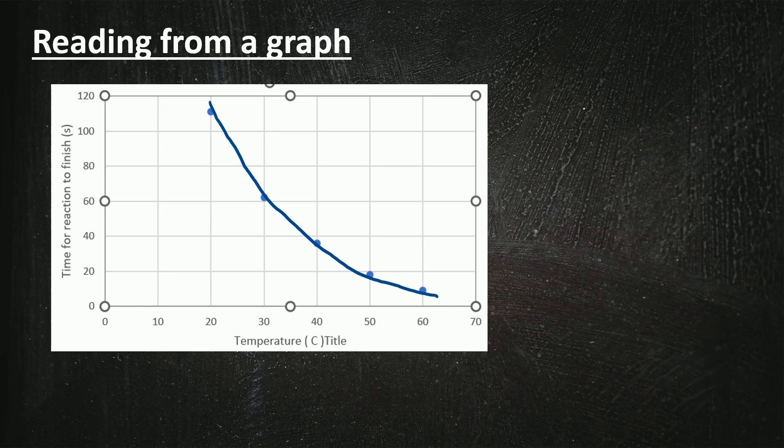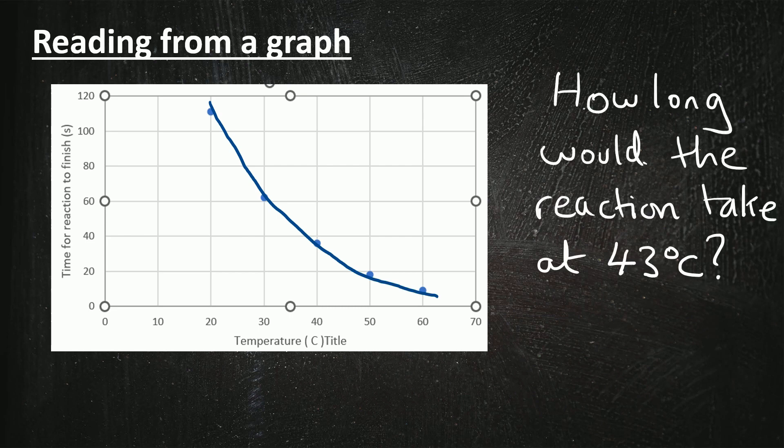On your exam you could also be asked to read off from a graph. For example, we've got a graph here of temperature along the x-axis and the time taken for the reaction to finish on the y-axis. And the question could be how long would the reaction take at 43 degrees celsius? So at this point you physically get your ruler out and draw a line on the graph that's on your exam paper. So I'm going to draw a line up from 43 degrees until it hits the curve. Your graph paper will have the smaller squares on as well which will make it easier for you. And then I'm going to draw another line with the ruler going across until it intercepts the y-axis. We're noticing that the interval going up the y-axis is different, it's going up in 20s this time. So I'm going to estimate that where that hits the y-axis it is 28 seconds, and that would be my answer.